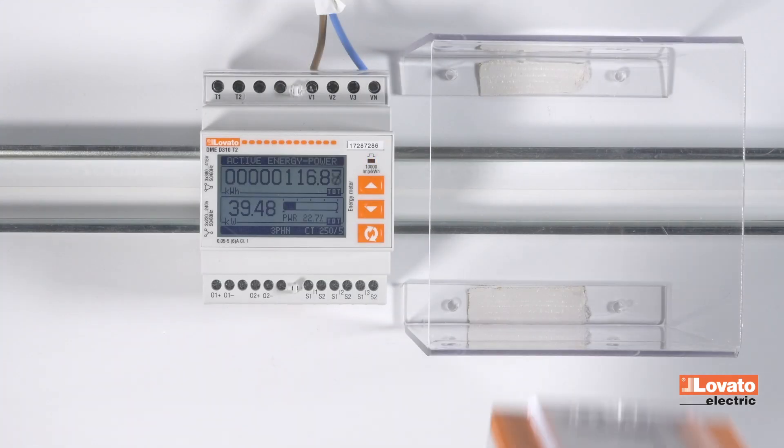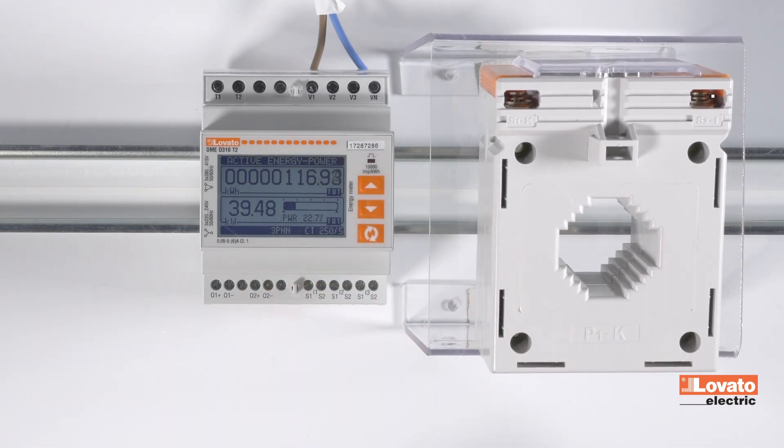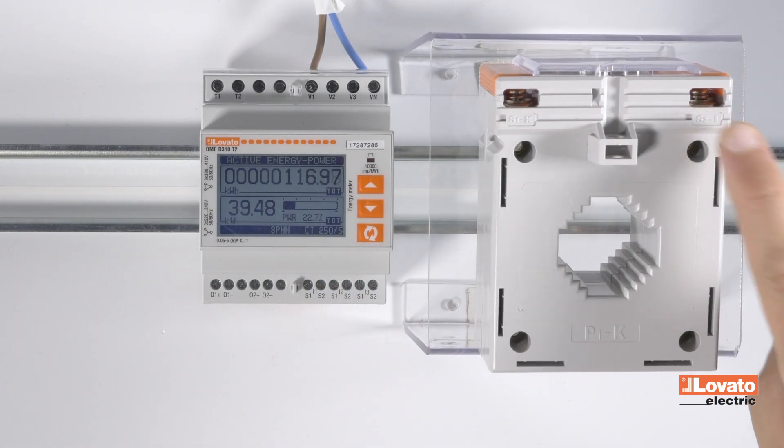If you're using a high-accuracy cable passing CT, like this DM1TP, which also operates at 250 amps, you'll find wire input S1 in this position and S2 in this other position.